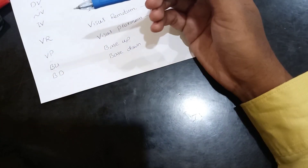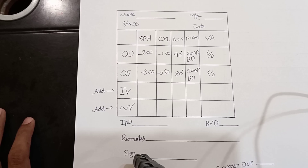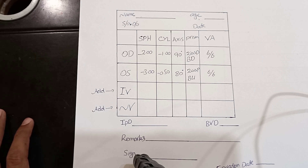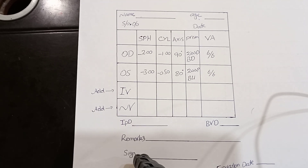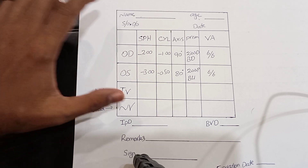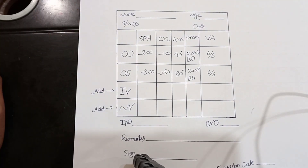We have discussed different abbreviations used in eye prescription cards. A prescription card is a complete description of all the refractive errors and refractive parameters of a patient, written by an ophthalmologist or optometrist. Different countries such as USA, UK, Pakistan, and India use different eye prescription cards.